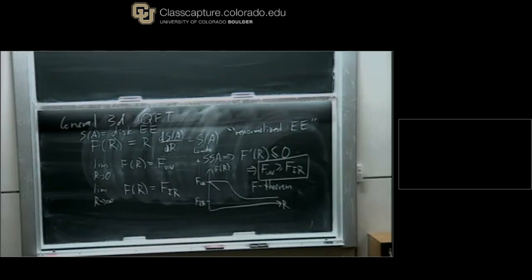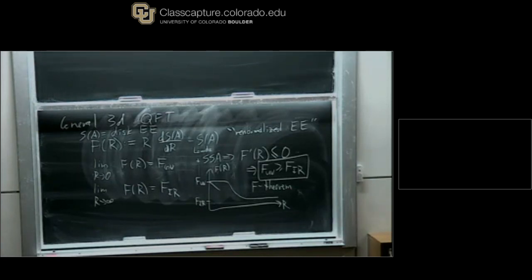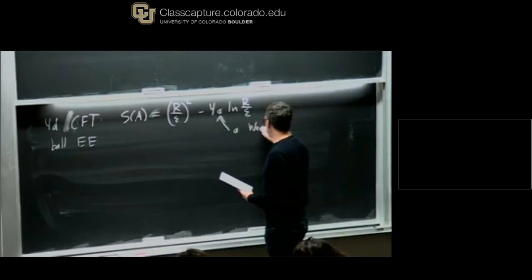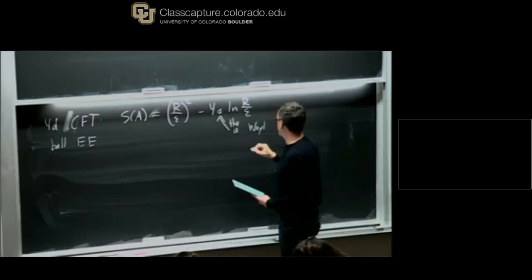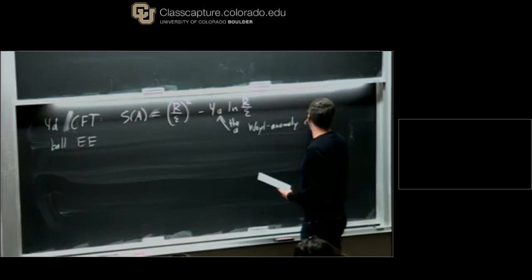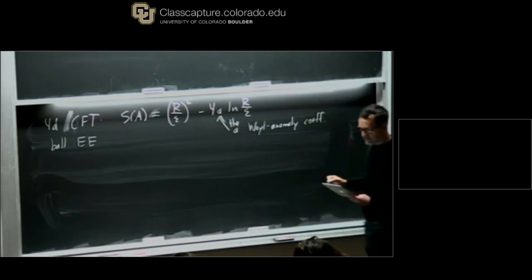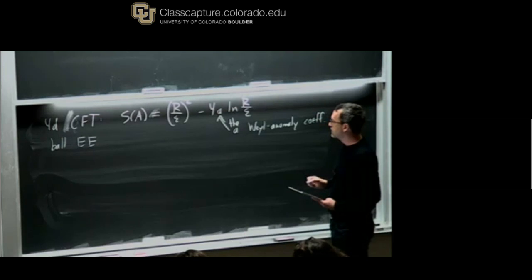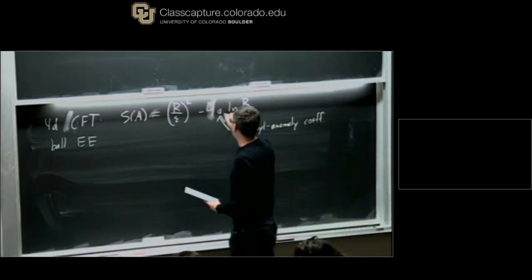In 4D, for a 4D CFT, by very similar reasoning you get the following expression. Now we have logs — for a ball, we pick up logs, so the area law divergence looks like this, and there's no linear term, no universal constant term. And this is the A Weyl anomaly coefficient.